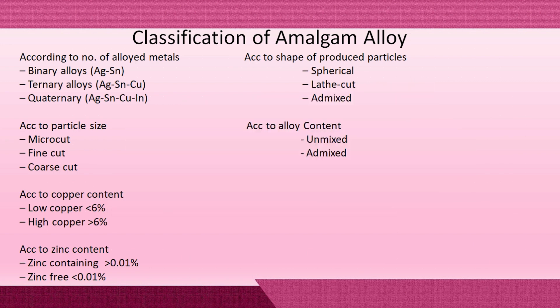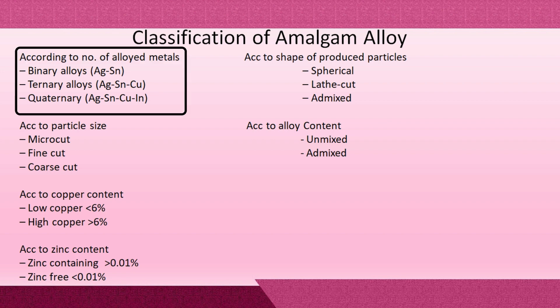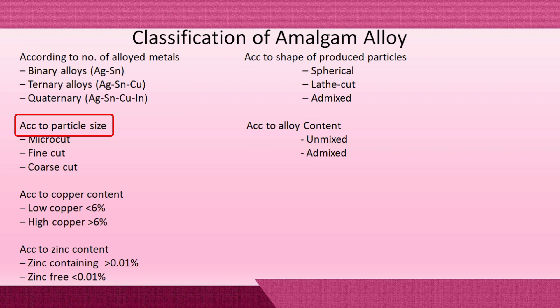There are many types of dental amalgam alloy. Classification according to number of alloyed metals: binary alloys with two metals — silver and tin; tertiary alloys with three metals — silver, tin, and copper; and quaternary alloys with four metals — silver, tin, copper, and indium. Classification according to particle size: micro-cut, fine-cut, and coarse-cut.